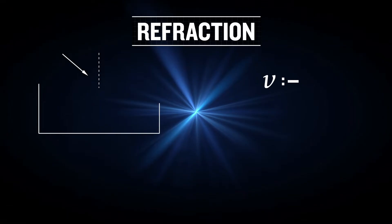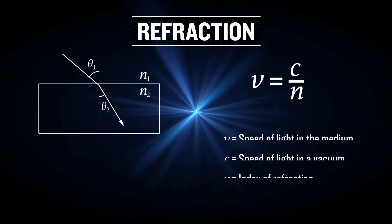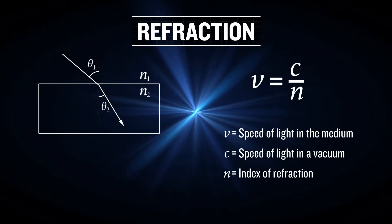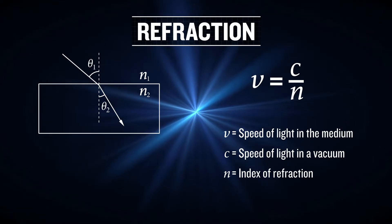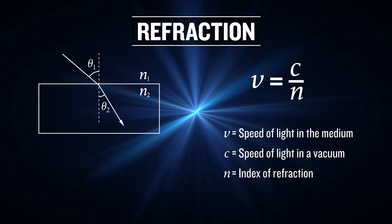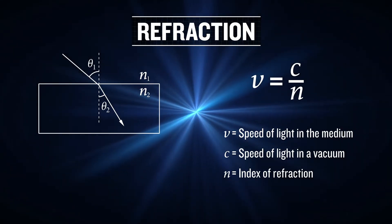Refraction of light in the eye is what gives us vision. Refraction is the bending of the path of a light wave as it passes across the boundary separating two media. It is caused by a change in speed of the light, which is a function of the index of refraction.